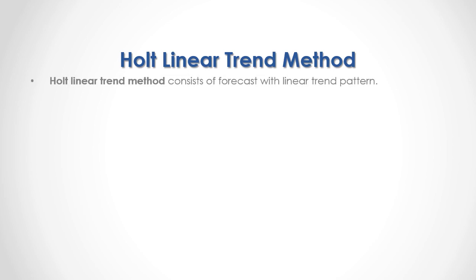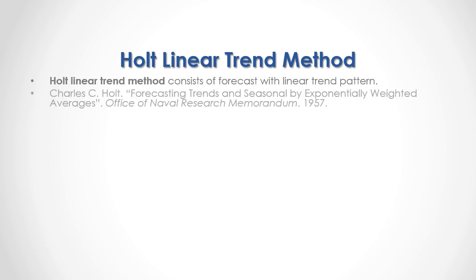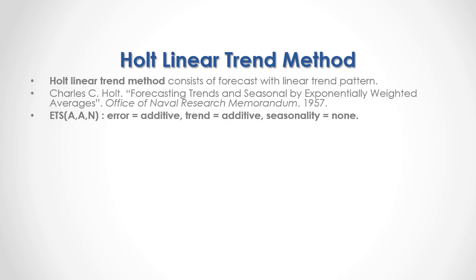An example of double exponential smoothing methods is the Holt linear trend method, which consists of forecasts with a linear trend pattern. For full reference, I recommend reading Charles Holt's 'Forecasting Trends and Seasonals by Exponentially Weighted Averages,' published by the Office of Naval Research Memorandum in 1957. Its ETS notation is AAN, in which error and trend are additive, and there is no seasonality.